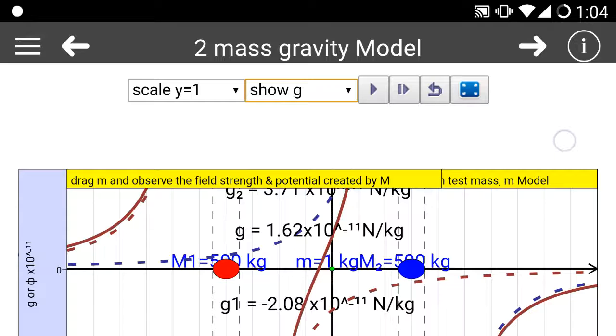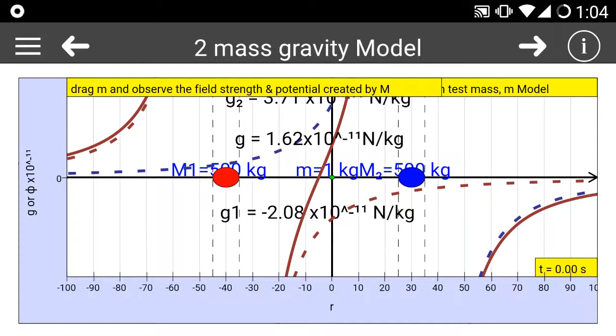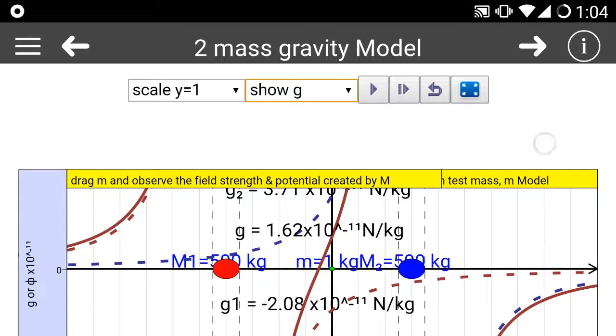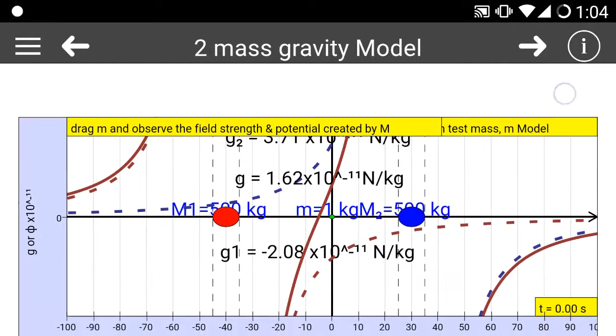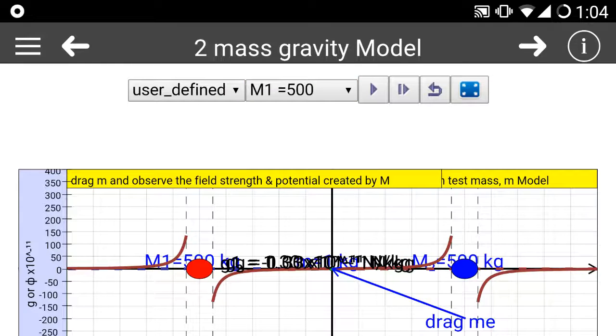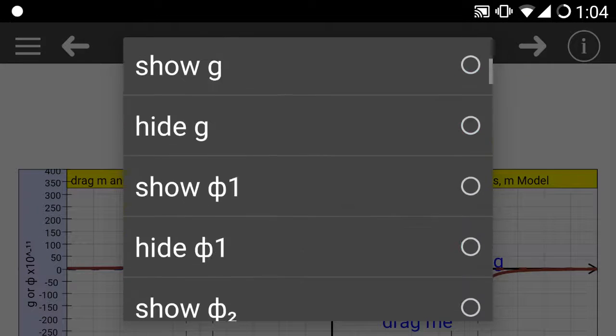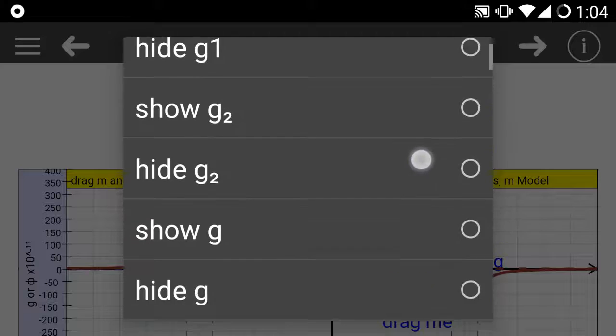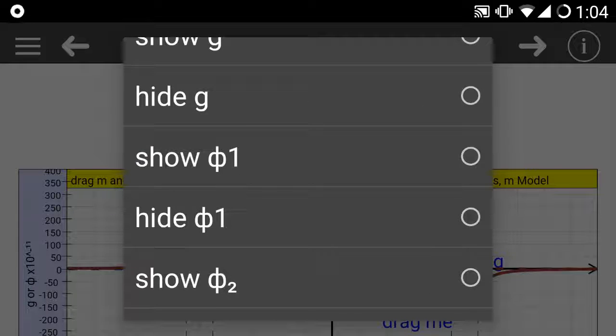At the position, adding up together, this is the resultant plot of gravitational field strength. Now, in addition to showing gravitational field strength, you could actually also show the potential.